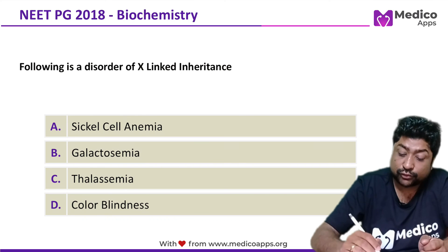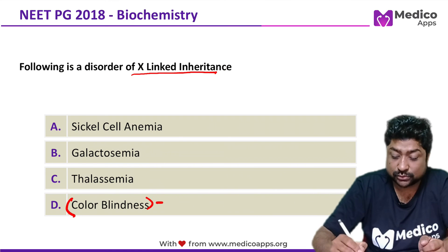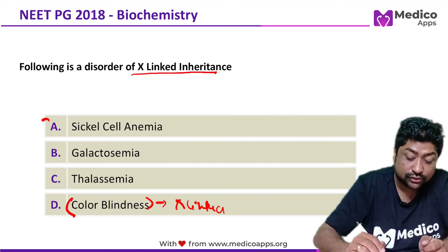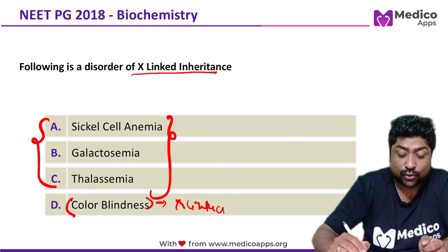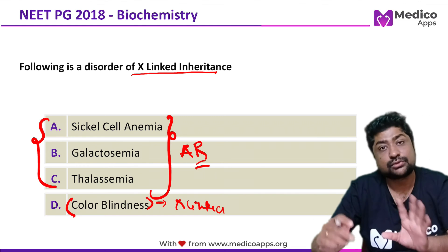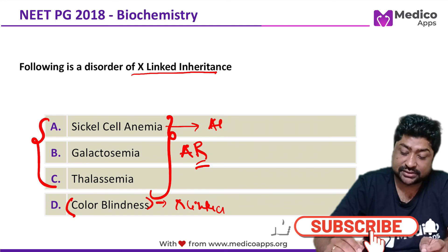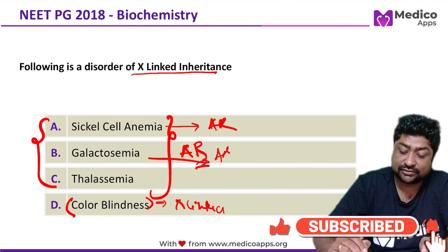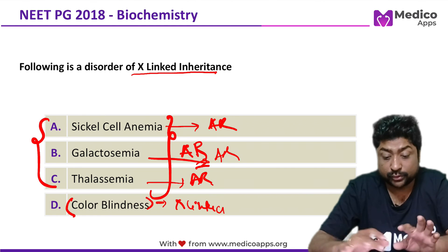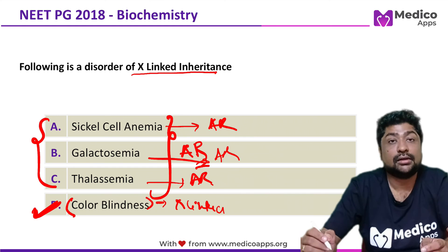Coming back to the question: which of the following is an X-linked inheritance disorder? We know color blindness is X-linked. None of the other options appear in the autosomal dominant list either, so sickle cell anemia, galactosemia, and thalassemia are all autosomal recessive. Remember it's thalassemia and not hemophilia in the options. So the correct answer is D, color blindness.